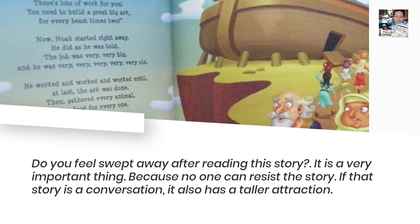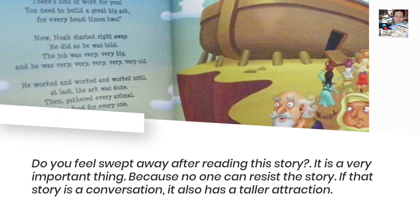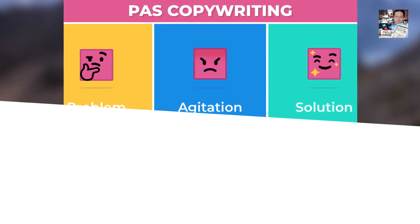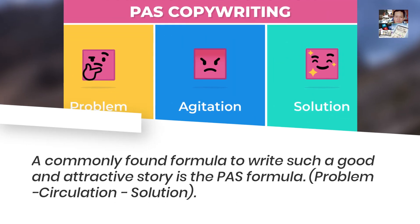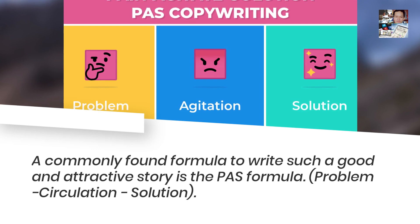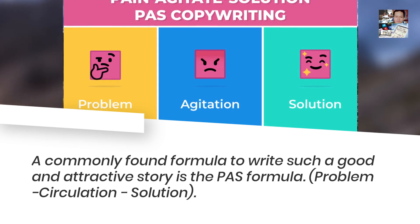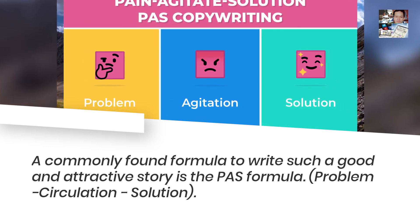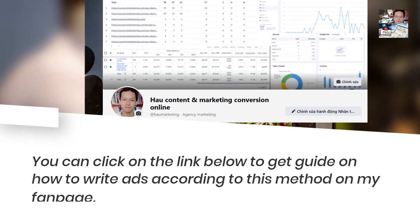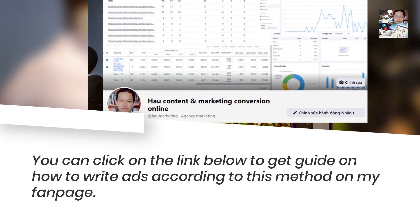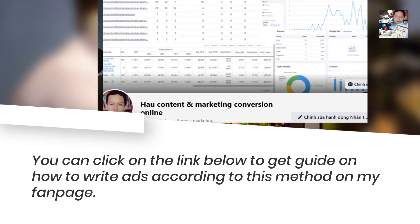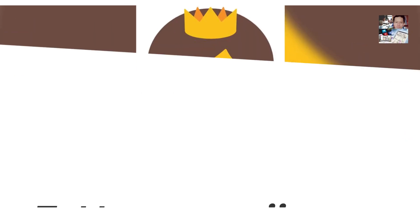If that story is presented as a conversation, it also has a stronger attraction. A commonly used formula to write a good and attractive story is the PAW formula: Problem, Agitation, Solution. You can click on the link below to get a guide on how to write ads according to this method on my fan page.